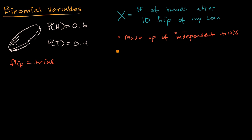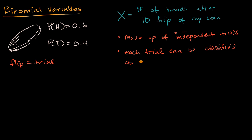Another condition is that each trial can be clearly classified as either a success or failure — or another way of thinking about it, each trial clearly has one of two discrete outcomes. In the context of this random variable x, we could define heads as a success, since that's what we are counting up. So you're either going to have success or failure — heads or tails — on each of these trials.